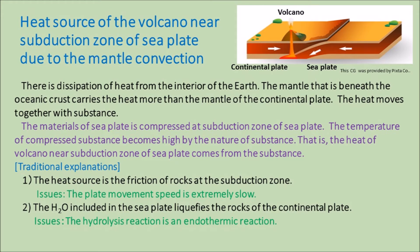The heat source of the volcano near the subduction zone of the sea plate is explained by mantle convection. There is dissipation of heat from the interior of the Earth; the mantle beneath the oceanic crust carries more heat than the mantle of the continental plate. The heat moves together with the substance, and the materials of the sea plate are compressed at the subduction zone, so the temperature of the compressed substance becomes high by the nature of the substance. Traditional explanations have issues: the explanation of friction of rocks at the subduction zone is problematic because plate movement is extremely slow, and the idea that H2O in the sea plate liquefies rocks of the continental plate is problematic because hydrolysis is an endothermic reaction.